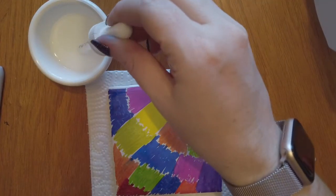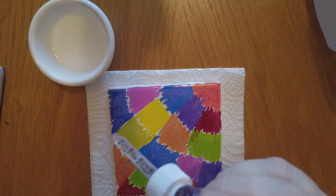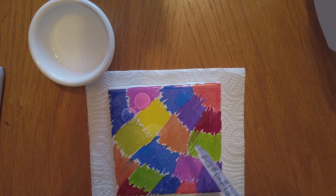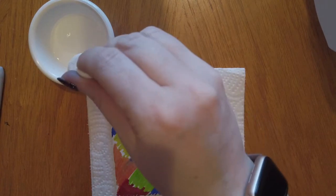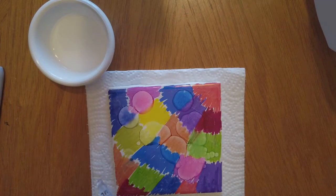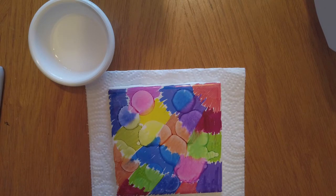Once you have your whole tile colored, use your eyedropper to drip drops of rubbing alcohol all over the tile. This will help make the colors blend together and give it a tie-dyed look.